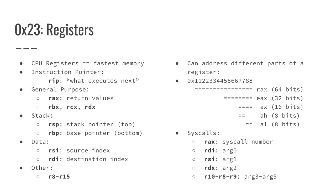CPU registers are actually the most local memory to the CPU that you can possibly get. It's even closer than the working memory of the CPU — it's how all calculations are performed. To actually be able to look at assembly and know what's happening, you need to know what the different registers are used for.